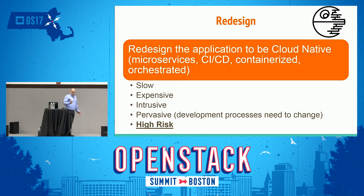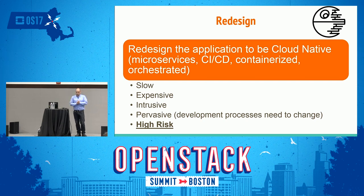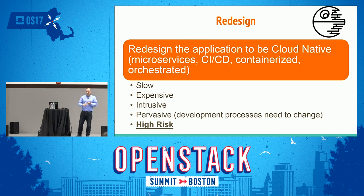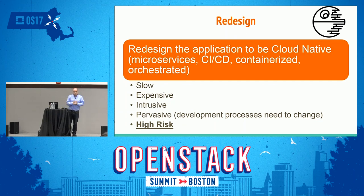Redesign: redesign the application to be cloud-native, write it as microservices, continuous integration, continuous development, containerized, orchestrated — everything we know from Kubernetes. The problem is this is a slow process. You need to rewrite all the software. It's very expensive, very intrusive to your business, and development processes and skills need to completely change. The risk is very high because you're changing your entire business core and rewriting it.